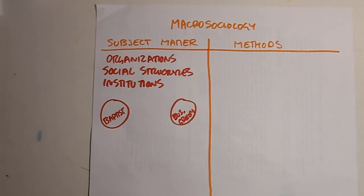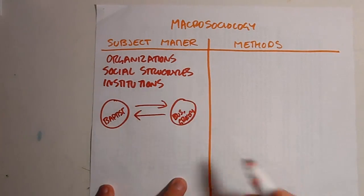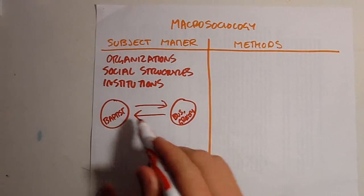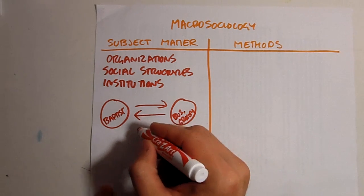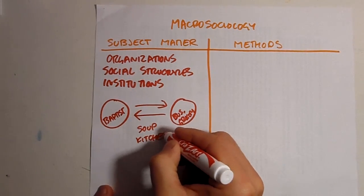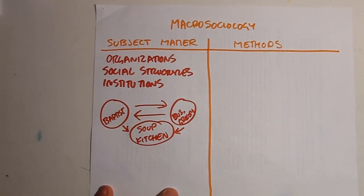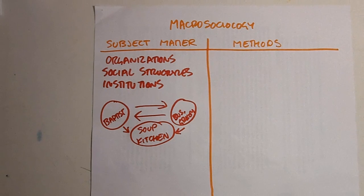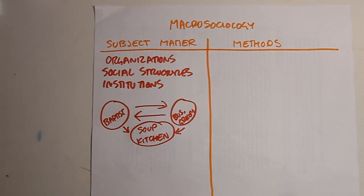Macro-sociology is interested in the ways these institutions relate to one another and interact. For instance, these two organizations might come together regularly to provide a soup kitchen for homeless or otherwise needy people in the neighborhood. Macro-sociology is the study of the ways that institutions work together to perform a social role or provide a social service.